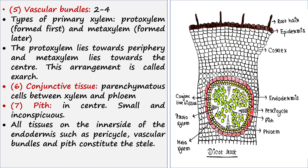There are two types of xylem: protoxylem and metaxylem. Protoxylem is formed first during tissue formation, while metaxylem is formed later. Protoxylem lies towards the periphery and metaxylem lies towards the center — this arrangement is called exarch. Between the xylem and phloem you can find conjunctive tissues, shown here as green cells.